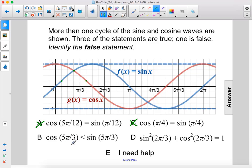Cosine of 5π over 3, so that's this amount, positive 1 half, is less than sine of 5π over 3. Well, this is a negative number, so this is not true. The answer to this question is B.